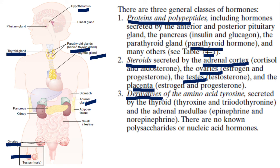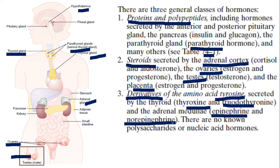The third category of hormones based on chemical nature are derivatives of the amino acid tyrosine. These are the thyroid hormones — thyroxine and the more potent triiodothyronine — both examples of amino acid derivatives. Another type in this category are epinephrine and norepinephrine, also called adrenaline and noradrenaline, which are hormones produced from the adrenal medulla.